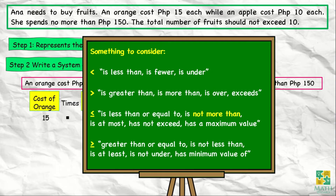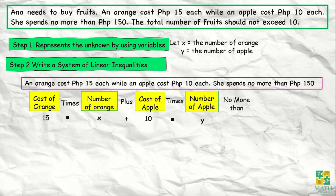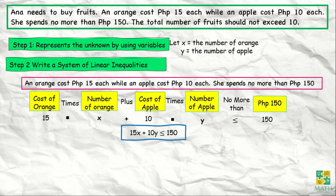Here are some keywords when translating inequality problems. 'Less than' is: fewer, under. 'Greater than' is: more than, over, exceed. 'Less than or equal to' is: not more than, at most, has not exceeded, has a maximum value. 'Greater than or equal to' is: not less than, at least, not under, has a minimum value. The phrase 'no more than' means less than or equal to, so we have 15x plus 10y is less than or equal to 150. This is our first linear inequality.